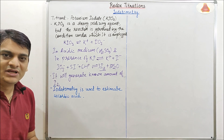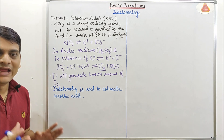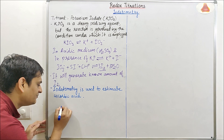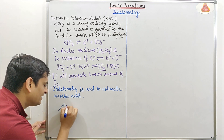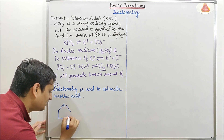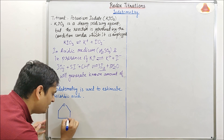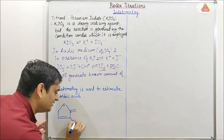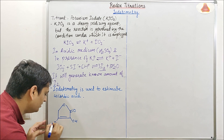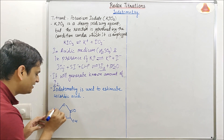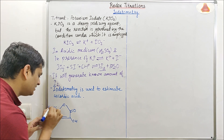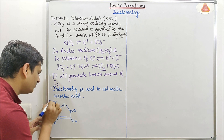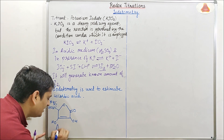Talking about the reaction between ascorbic acid and the titrant: first I will draw the structure of ascorbic acid, which is a 5-membered ring. It contains two OH groups, and here it contains a CHOH group and a CH2OH group. This is the structure of ascorbic acid.